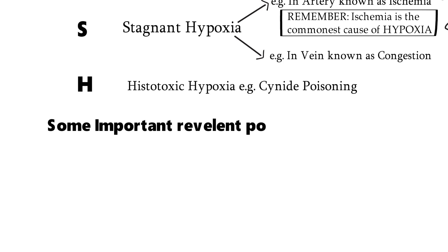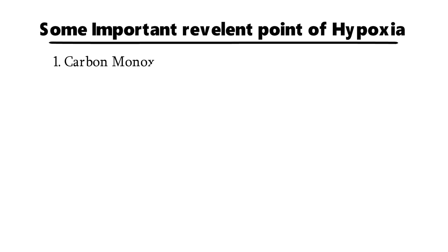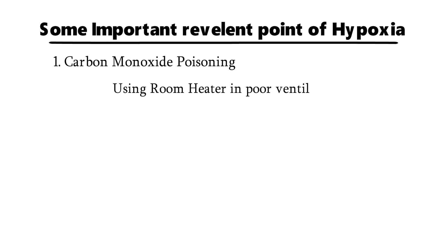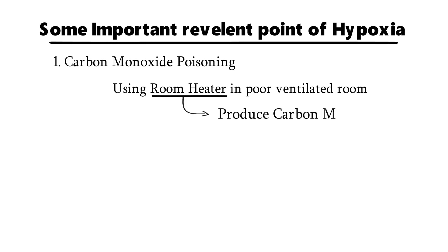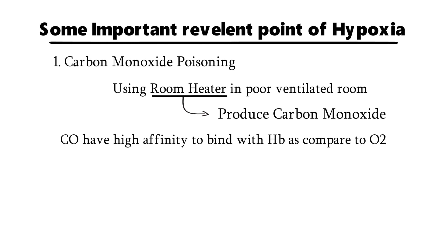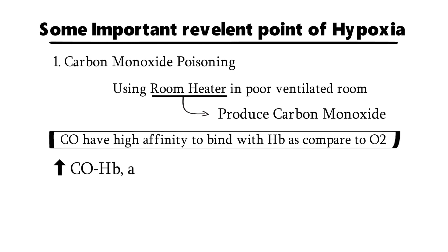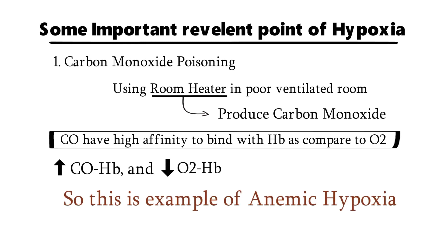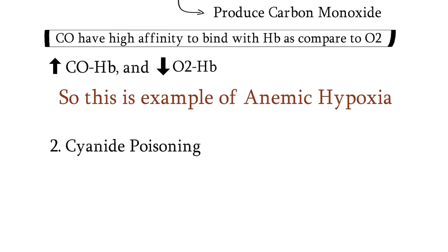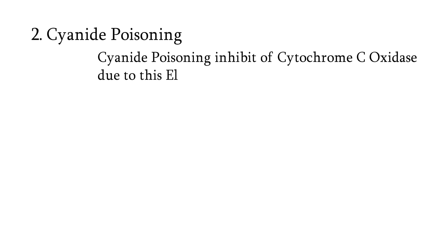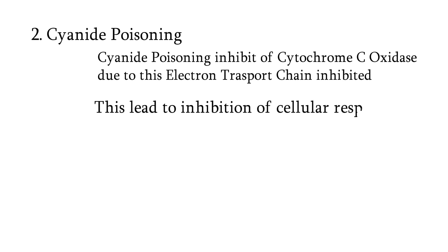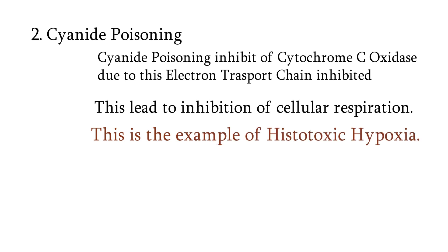Now let us discuss some important relevant points of hypoxia. The first one is carbon monoxide poisoning. If someone uses a room heater at night in a poorly ventilated room, the heater produces carbon monoxide. The person inhales carbon monoxide, which has a high binding affinity with hemoglobin compared to oxygen. So carboxyhemoglobin increases and oxyhemoglobin decreases — this is an example of anemic hypoxia. The second one is cyanide poisoning. Cyanide inhibits cytochrome C oxidase, causing the electron transport chain to shut down. If the electron transport chain is not working, there is no cellular respiration in the cell and the cell cannot use oxygenated blood. This is an example of histotoxic hypoxia.